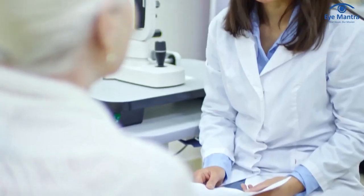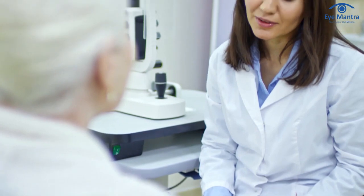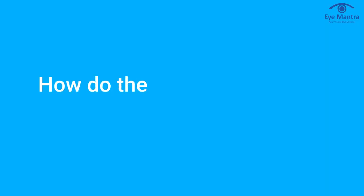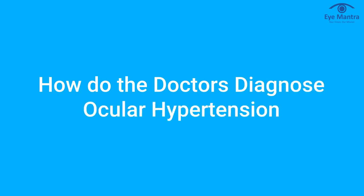Sometimes this can occur months or years after the injury. During your routine eye exam, be sure to mention to your doctor if you have experienced any recent or past eye injuries. These are all the causes of ocular hypertension. Whenever you feel that you have undergone any of them, you must reach out to an eye specialist for diagnosis. Let us now proceed to how doctors diagnose ocular hypertension.